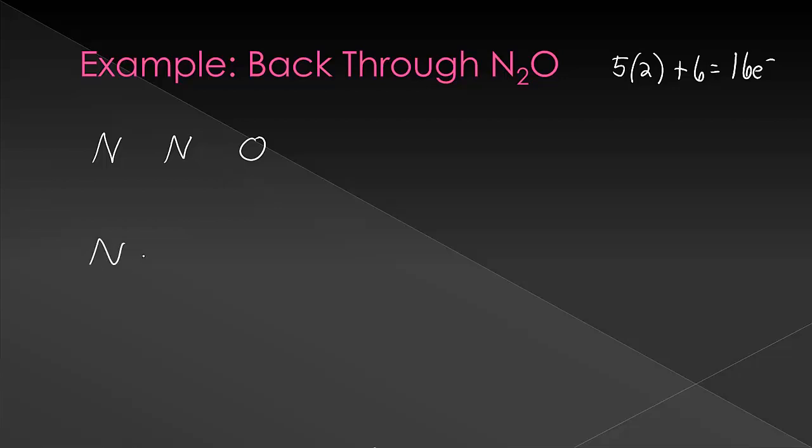So after we had gone through and done all the possible distributions, what we saw as our choices was these structures. Now we need to remember back what we said about these, and what we said the right Lewis structure was, and why.